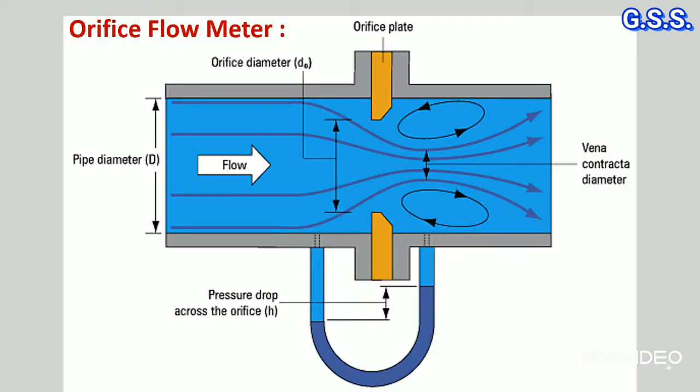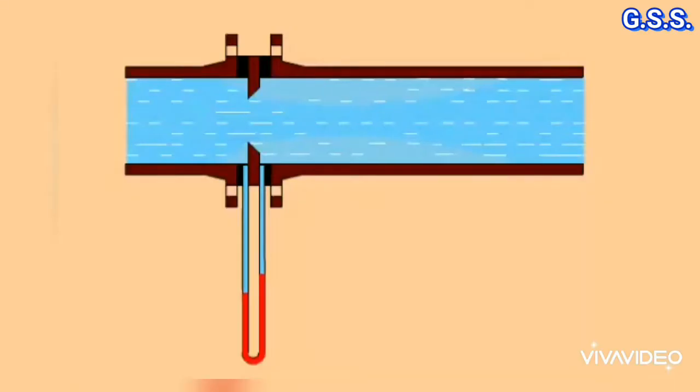In orifice flowmeter, an orifice plate is inserted in a pipeline between two flanges. The orifice plate has a round hole at the center. This hole makes a constant throttling and generates differential pressure. This differential pressure is proportional to flow rate and is used to determine volume flow rate through the pipeline.